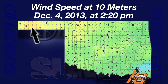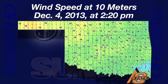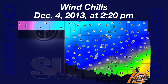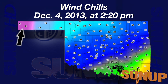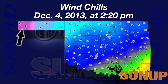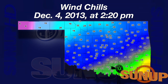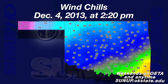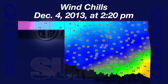Winds whipped up to 19 miles per hour in the panhandle. Those higher wind speeds combined with the cold air temperatures made Boyce City and Kenton feel like it was 6 degrees. It felt like 6 degrees in Boyce City and 76 degrees in the southeast — a 70-degree spread in wind chill across Oklahoma Wednesday afternoon.